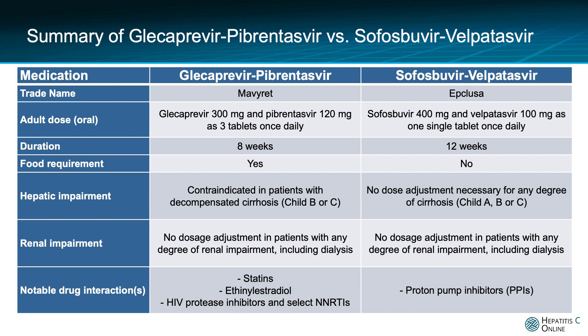To summarize, glecaprevir-pibrentasvir and sofosbuvir-velpatasvir are both dosed daily, with glecaprevir-pibrentasvir given for 8 weeks and sofosbuvir-velpatasvir given for 12 weeks under the simplified treatment algorithm. Glecaprevir-pibrentasvir should be administered with food and cannot be given to people with decompensated cirrhosis, while sofosbuvir-velpatasvir can be given with or without food and is safe in people with decompensated cirrhosis. Both are safe for use in renal impairment, even in patients on hemodialysis. Notable drug-drug interactions with glecaprevir-pibrentasvir include those with statins, certain birth control pills, and select HIV medications, while the most common drug-drug interaction with sofosbuvir-velpatasvir is that with proton pump inhibitors.